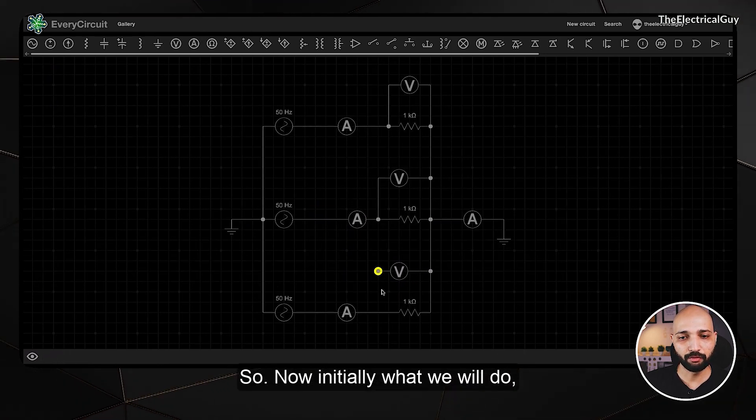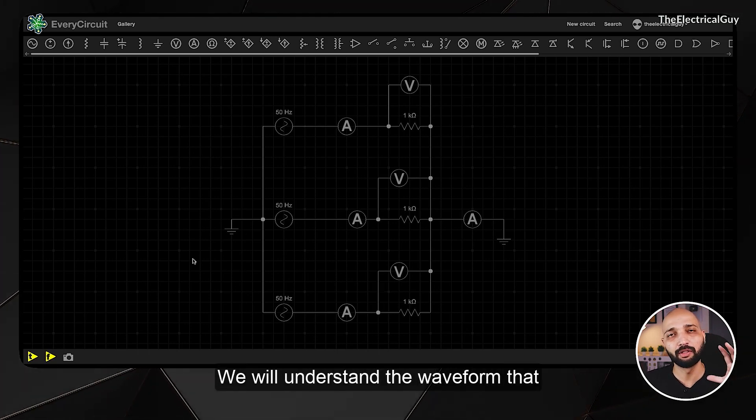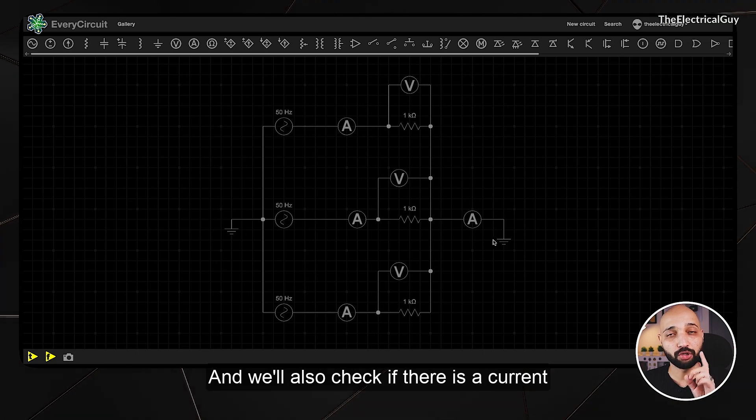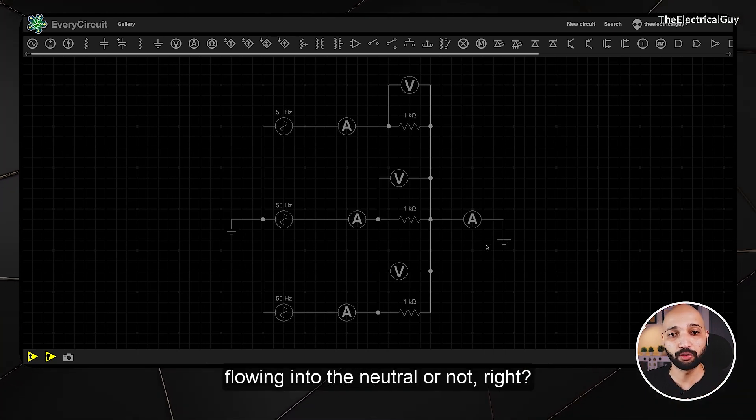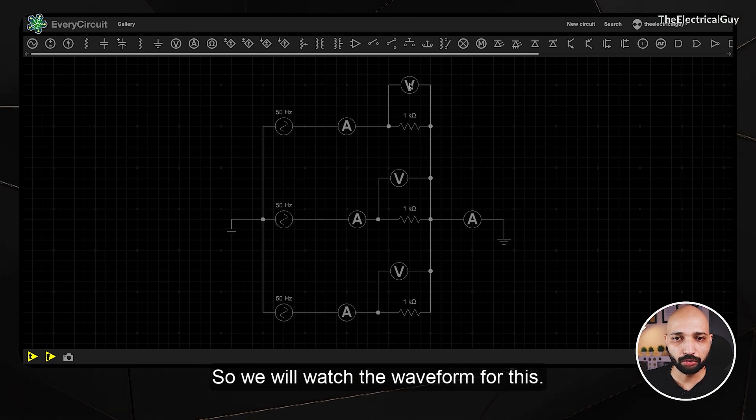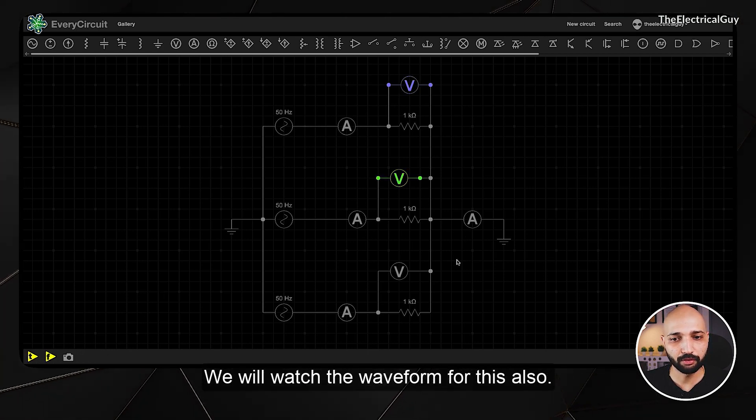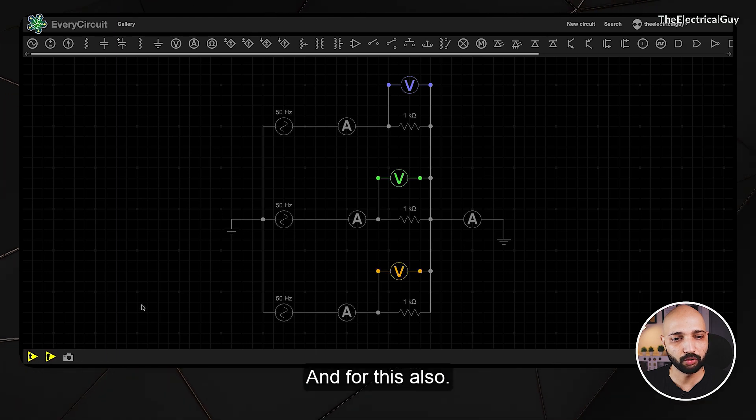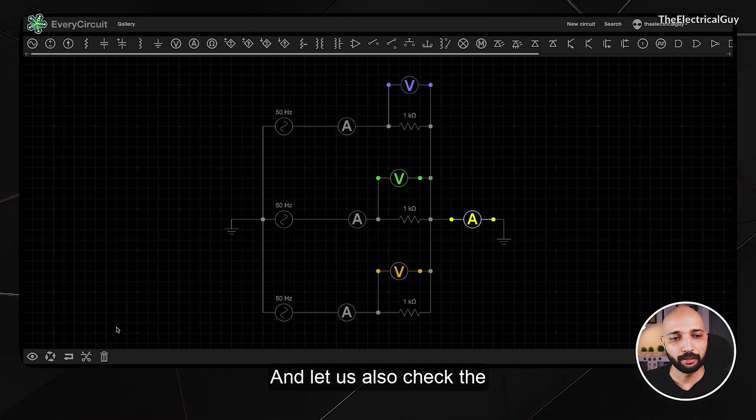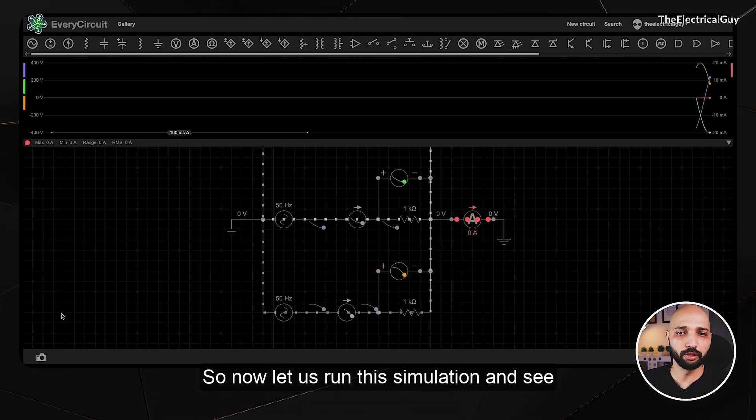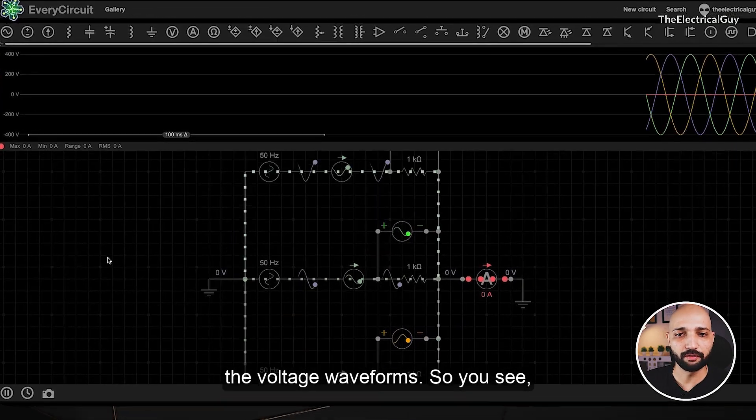Initially what we will do is keep the load balanced. We will understand the waveform that is coming out of the balanced load and we will also check if there is a current flowing into the neutral or not. We will watch the waveform and check the current in the neutral. Now let us run the simulation and see the voltage waveforms.